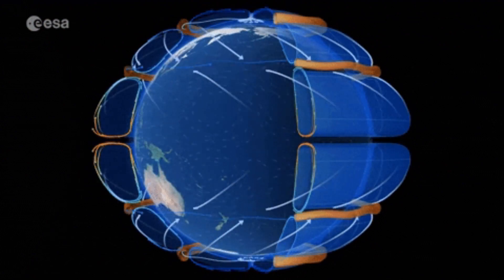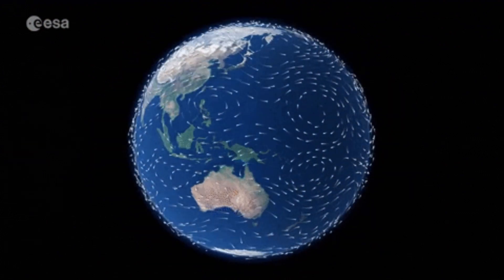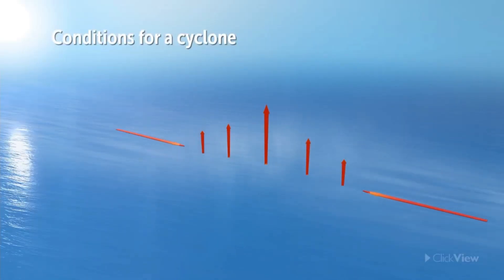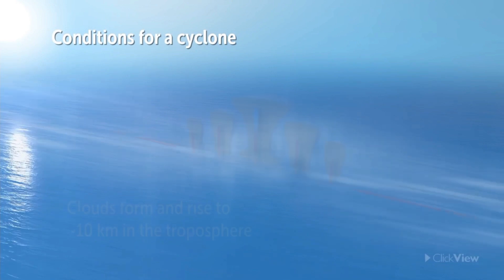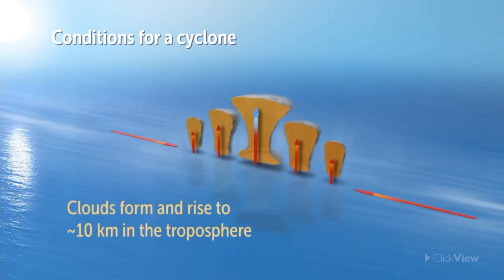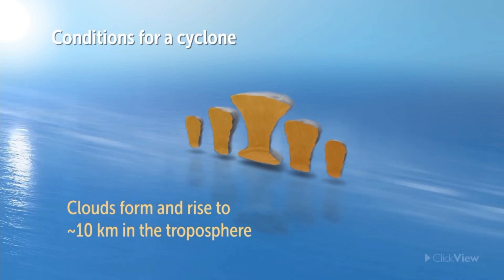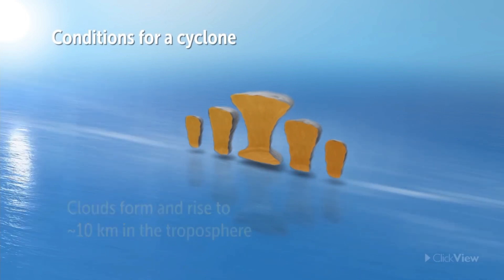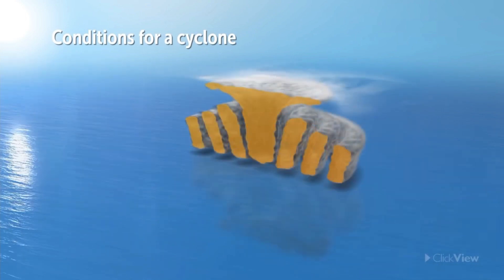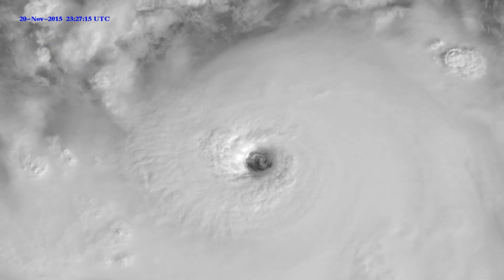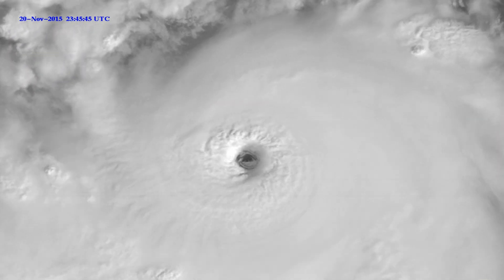Generally, winds flow from high pressure region to low pressure region. The air in the low pressure region vaporizes continuously, leaving a void which is filled by the cold air from the high pressure region. This low latitude cold air also gets vaporized, resulting in the formation of clouds. This leads to the formation of an eye-like structure at the center of the cyclone.